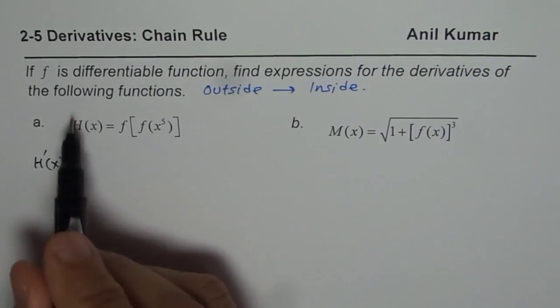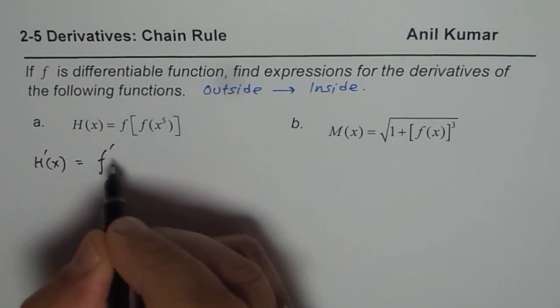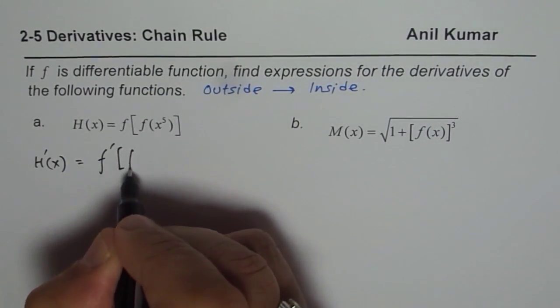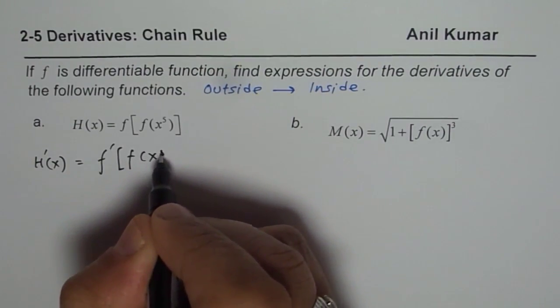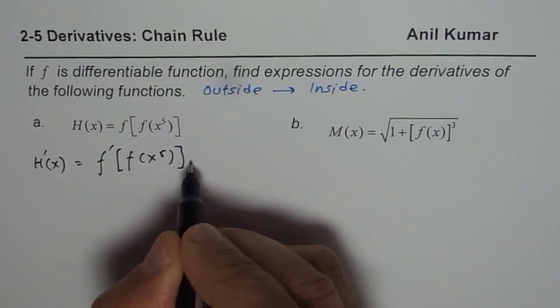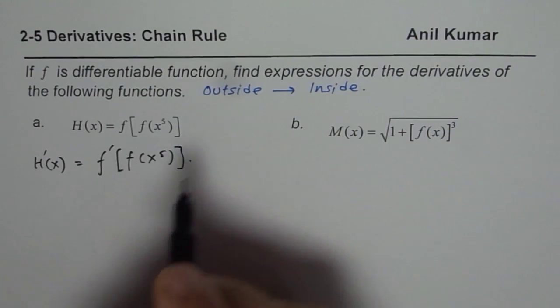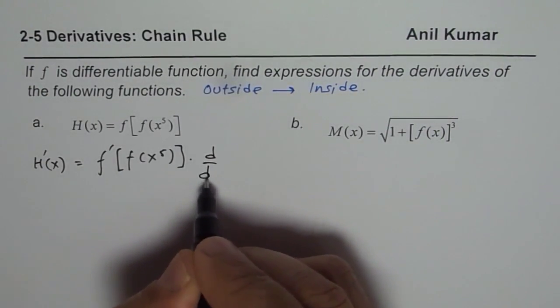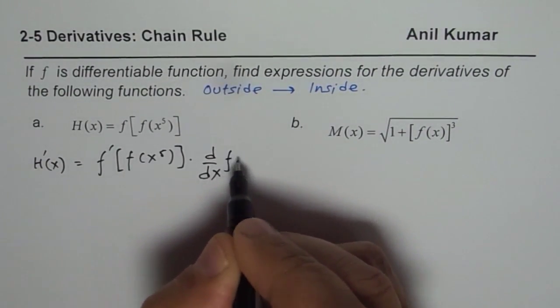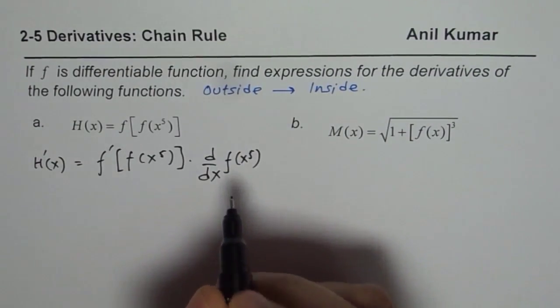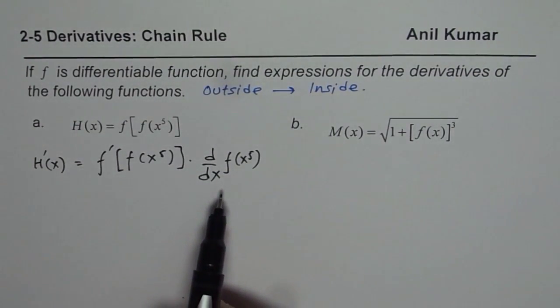The derivative of the outside function is f' of all this. So we have f(x^5), times the derivative of the inside function. Let me write d/dx of f(x^5). That is how it could be written.